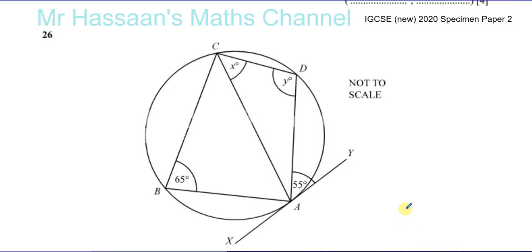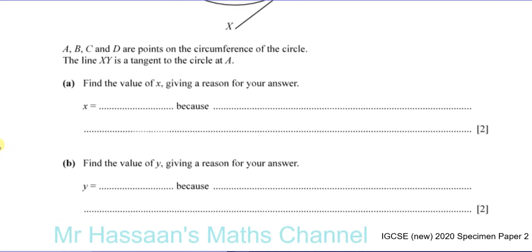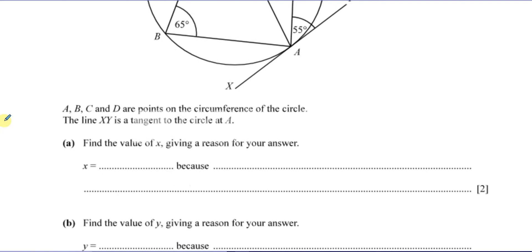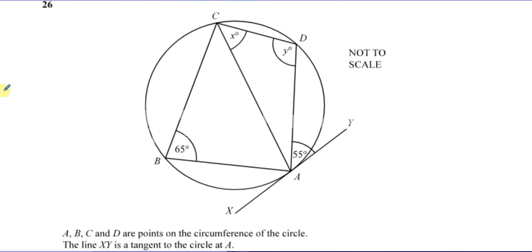Now for question number 26, which is about angles in circles from the specimen paper 2 for the new IGCSE. One of the things you notice here, which is kind of newish, is they're asking you to give reasons for your answers for finding angles, which is something which a lot of students don't know how to do. So you have to understand how to do this, knowing the reasons for your answers.